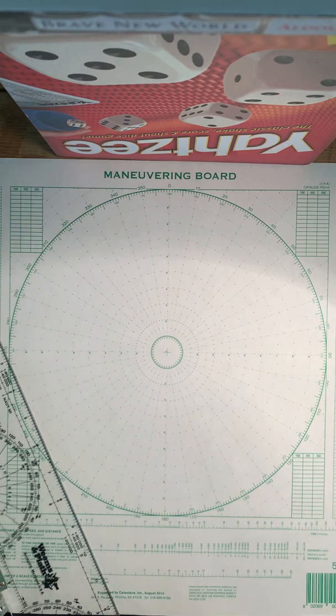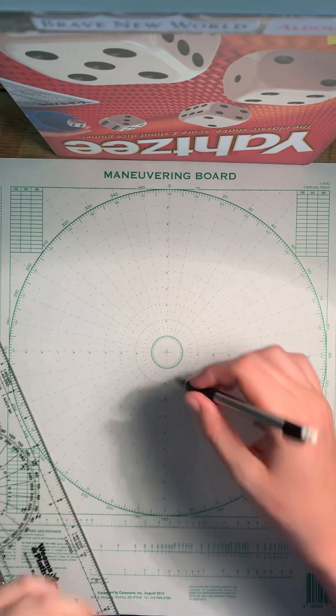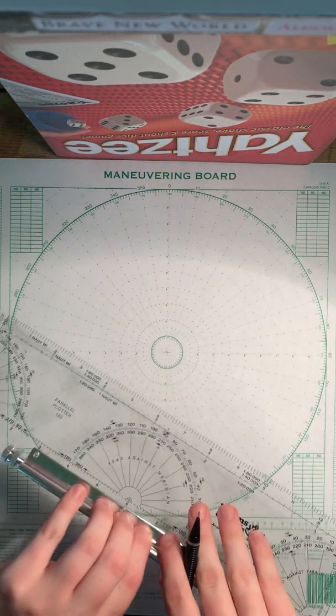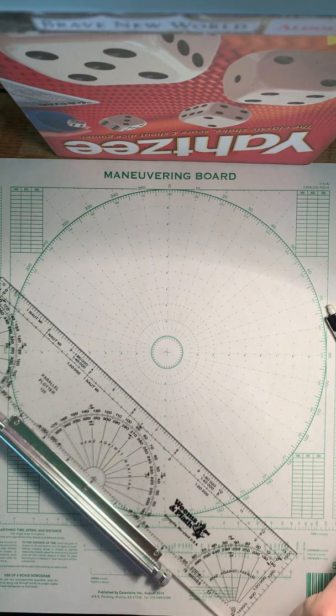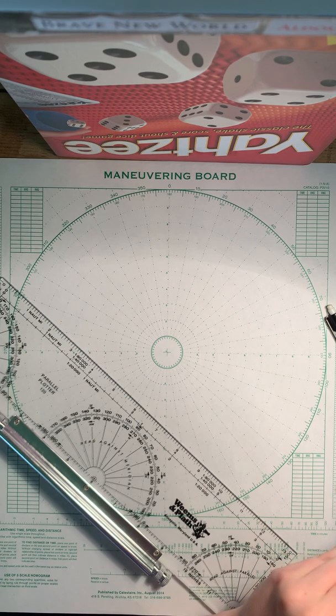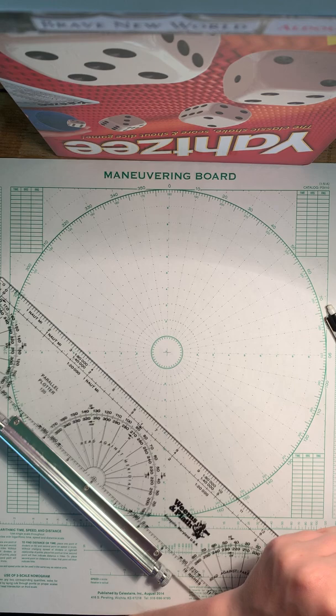You are the Wayne E. Meyer, and so like a traditional maneuvering board, you are going to be in the center. You're on course 070 true at a speed of 15 knots. So you can take your compass and measure out 15 knots on the 5 to 1 scale because 5 to 1 is always speed scale.